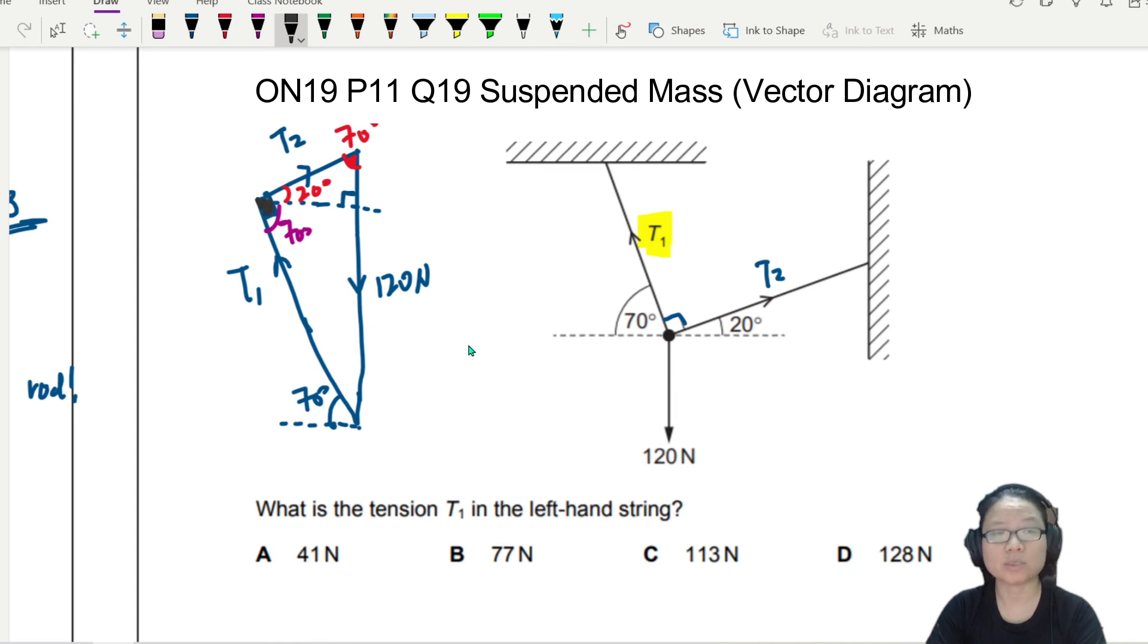So I want to find T1. So T1 is opposite of 70. So I will take sine 70. Because this angle here is 70. Sine 70 is opposite T1 over 120. So you can find T1 like that.